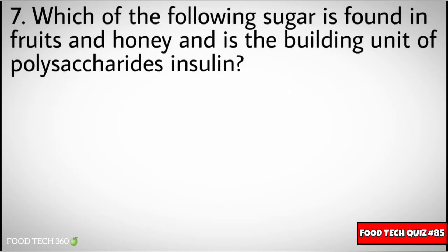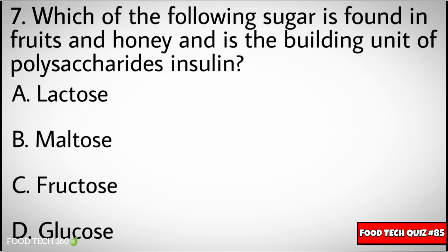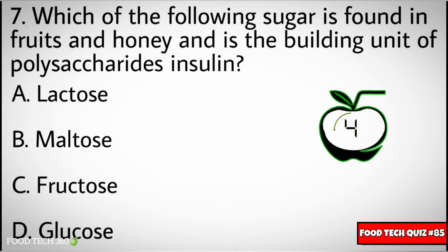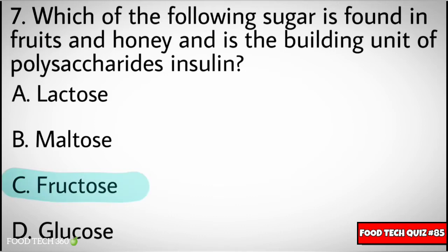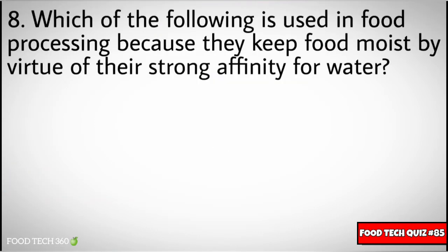Question number seven: which of the following sugar is found in fruits and honey and is the building unit of polysaccharides and inulin. Options: A) lactose, B) maltose, C) fructose, D) glucose. Correct answer: C) fructose. Question number eight: which of the following is used in food processing because they keep food moist by virtue of their strong affinity for water. Options: A) sweeteners...